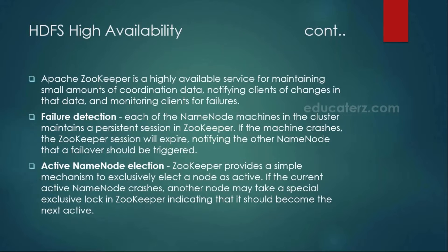When you are talking about the zookeeper, it works like a coordination service. It consists of coordination data — that is, which machine is acting now, which service is active, which service is down. So it majorly does two things: failure detection — meaning in case your primary name node or standby name node, any name node goes down, your zookeeper gets notified and your zookeeper failover controller will start another standby name node. Also, zookeeper handles active name node elections — that is leader elections — which one has to be the active, which one has to be the standby. That information is also maintained by your zookeepers.